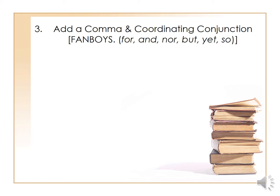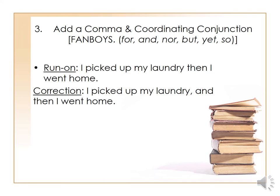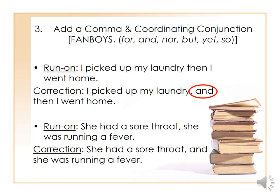The third way to solve a run-on is to add a comma and a coordinating conjunction — FANBOYS. These are seven words: for, and, nor, but, or, yet, and so. Look at the example and correction: 'I picked up my laundry, and then I went home.' We have a comma and the coordinating conjunction 'and.' Another example: 'She had a sore throat, and she was running a fever.' Again, a comma and 'and.' Of course, you can use other coordinating conjunctions as well.